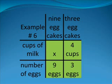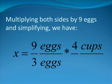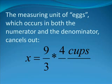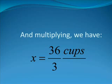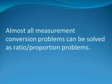In the lower right-hand corner, we have our equation. We write it as X divided by nine eggs equals four cups divided by three eggs. The measuring unit of eggs, which occurs in both the numerator and the denominator, cancels out. At first, we have X equal to nine eggs times four cups divided by three eggs, once we multiply both sides by nine eggs. The eggs cancel out, and we are left with X equals nine times four cups divided by three. And multiplying, we have X equal to 36 cups divided by three, which simplifies to X equal to 12 cups of milk.